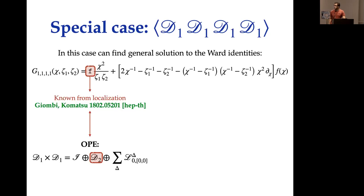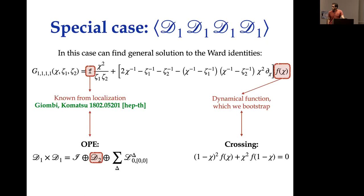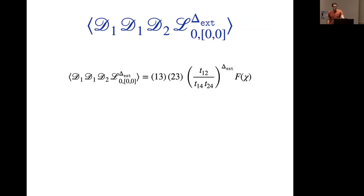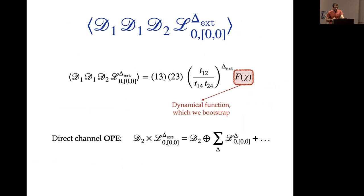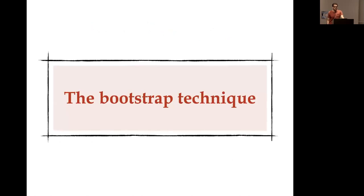The other type of correlators we are forced to consider to solve the mixing are correlators with a long operator. These are also fixed in terms of a single dynamical function of chi. The reason these correlators are useful is that the OPE between the two external operators contains exactly the same operators that appear in the D1×D1 OPE, so it allows us to probe the mixing sector we care about.